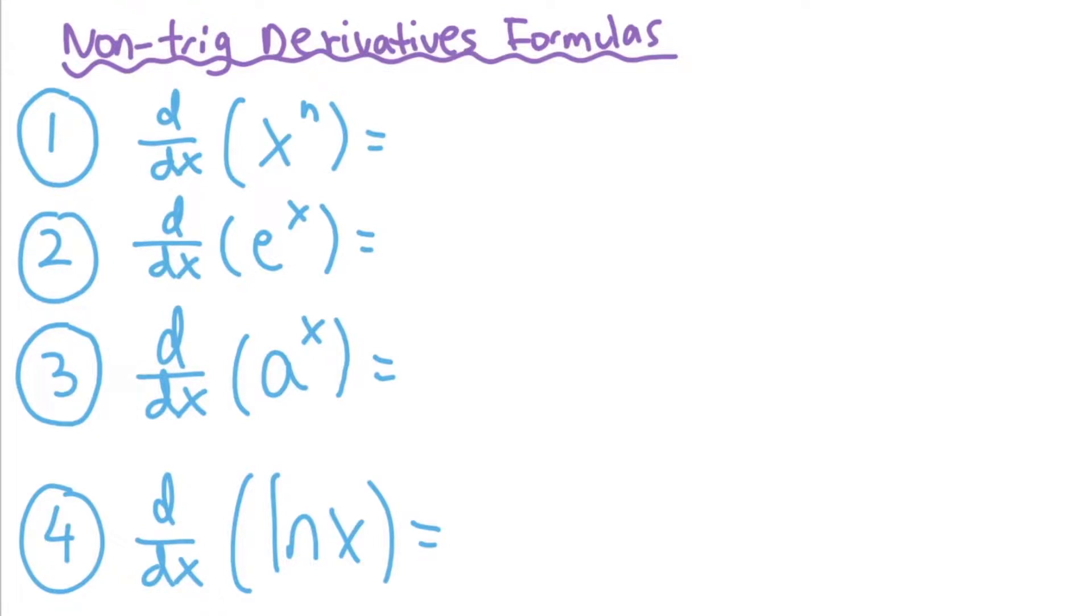To start us off, we're going to talk about some non-trig derivatives formulas. It's going to be very common. So first, you see x to the n is just going to be n times x to the n minus 1.